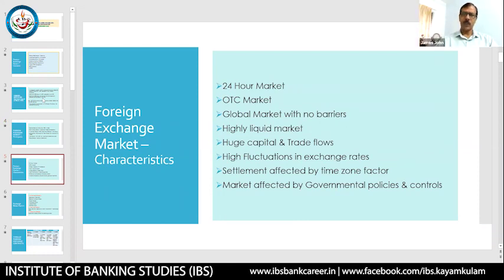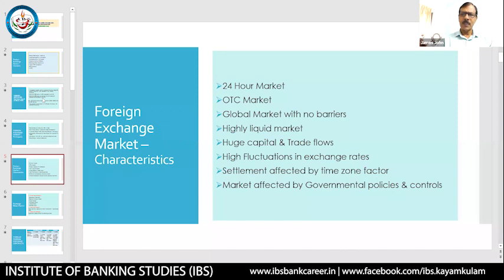Now the characteristics or features of foreign exchange — I stress on this because there can be a question asking which of the following is not a feature of the forex market. First, it is a 24-hour market: this market functions around the globe because participants are located anywhere in the world. Different countries are under different time zones — here it may be 7:30 AM while in the US it is 8:30 PM, a difference of 11 hours. So some part of the globe is always actively participating.